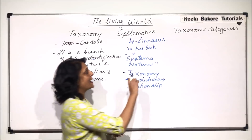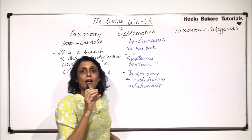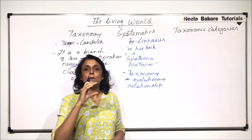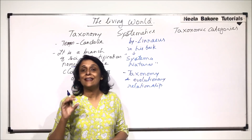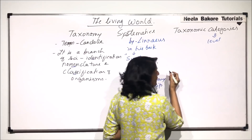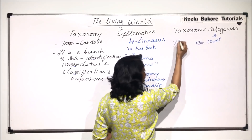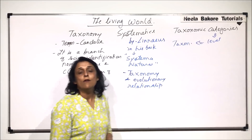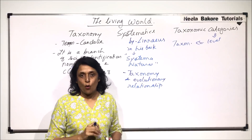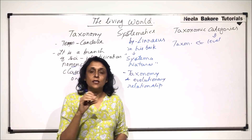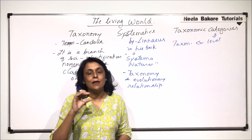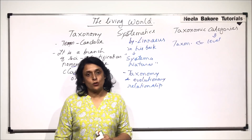Coming to the categories — what exactly is a category? A category is a term given to a level. Organisms at a particular level are considered to be in that category. Category basically means a level, and technically it is known as a taxon. For example, phylum is a category or taxon, and species is a category or taxon. All organisms of a particular species in that level make one category or one taxon.